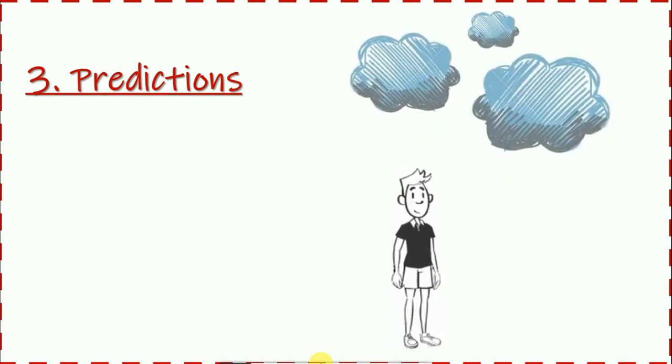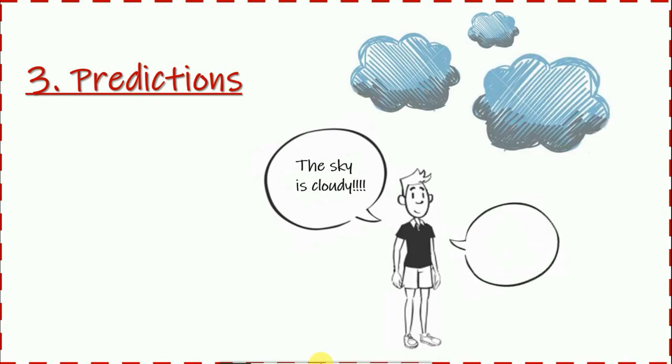The third use of the verb 'will' is with predictions. To understand what a prediction means, watch this story: a man is looking at the sky. He says the sky is cloudy, then he says: 'It will rain.' This man made a prediction — he predicted that it will rain.